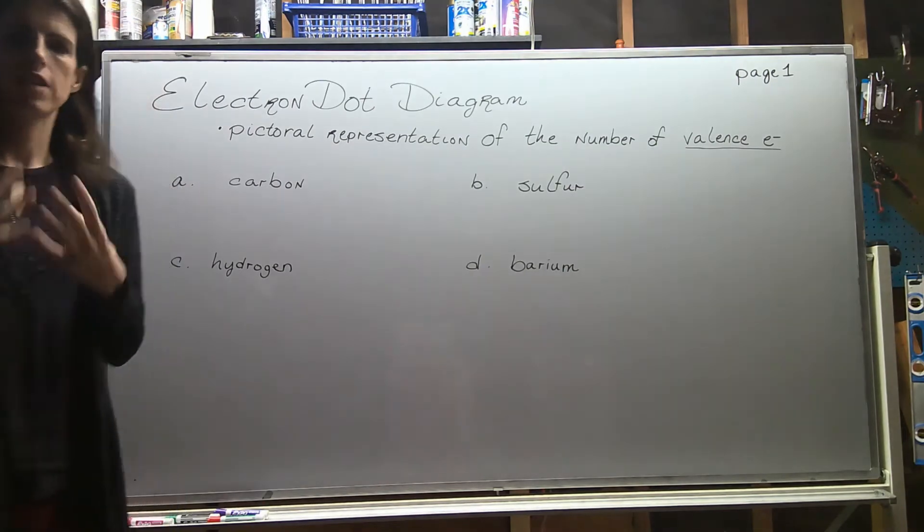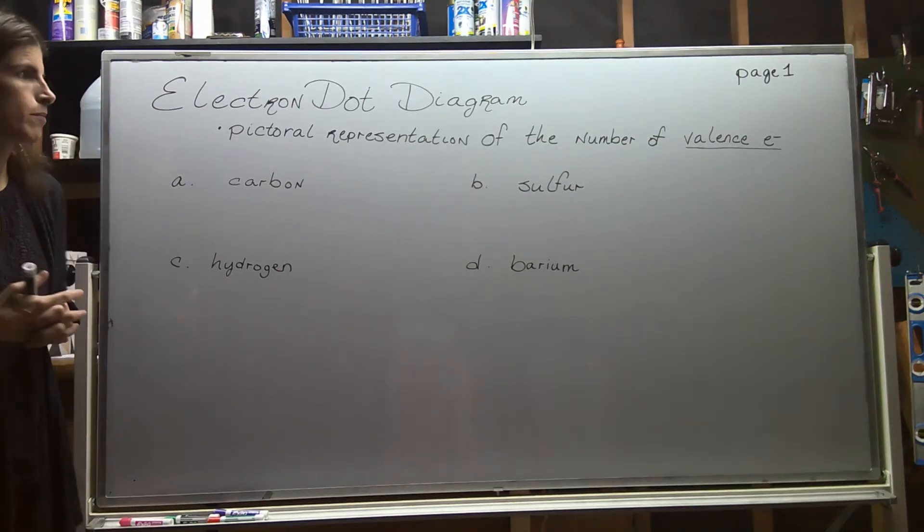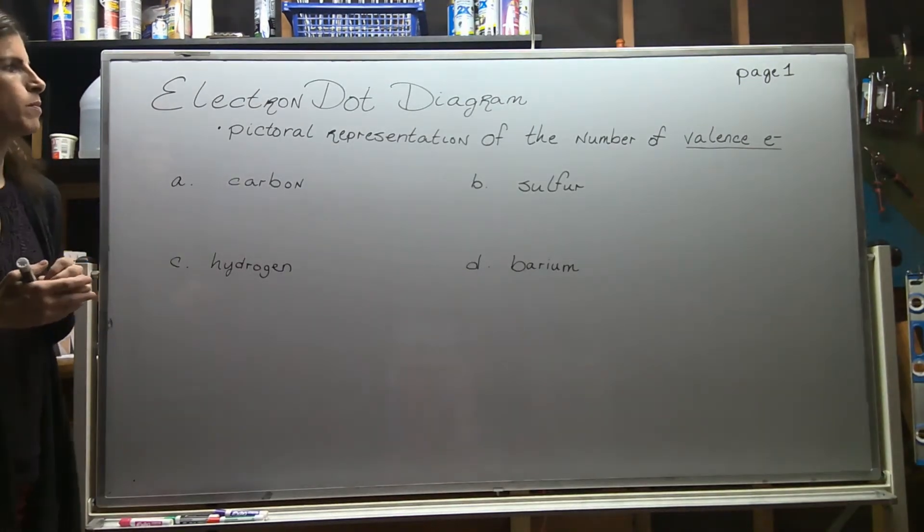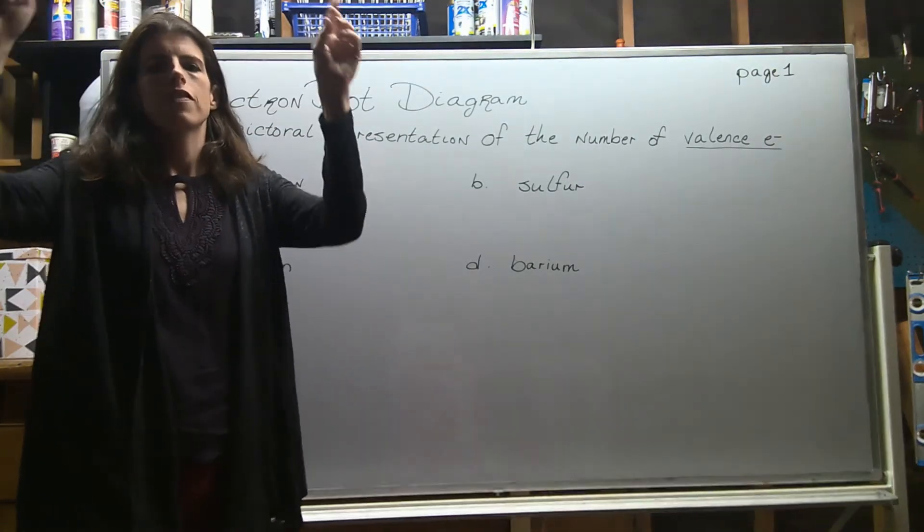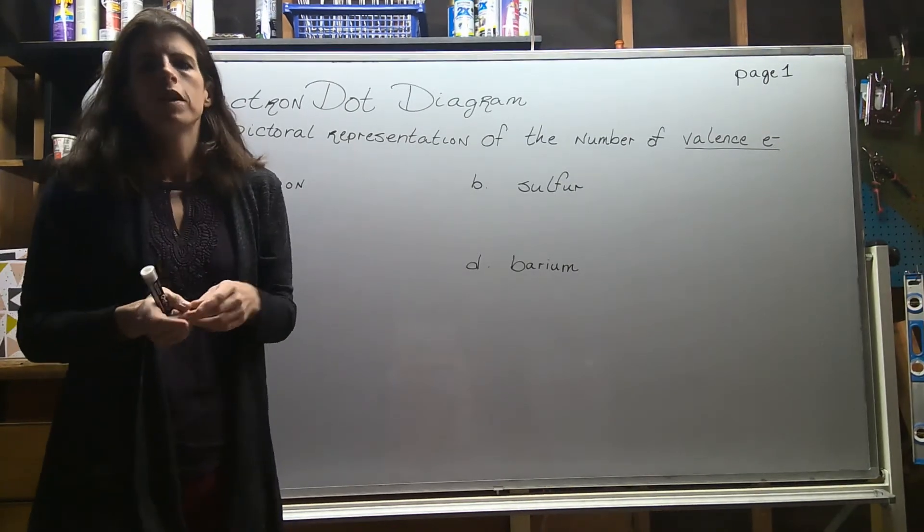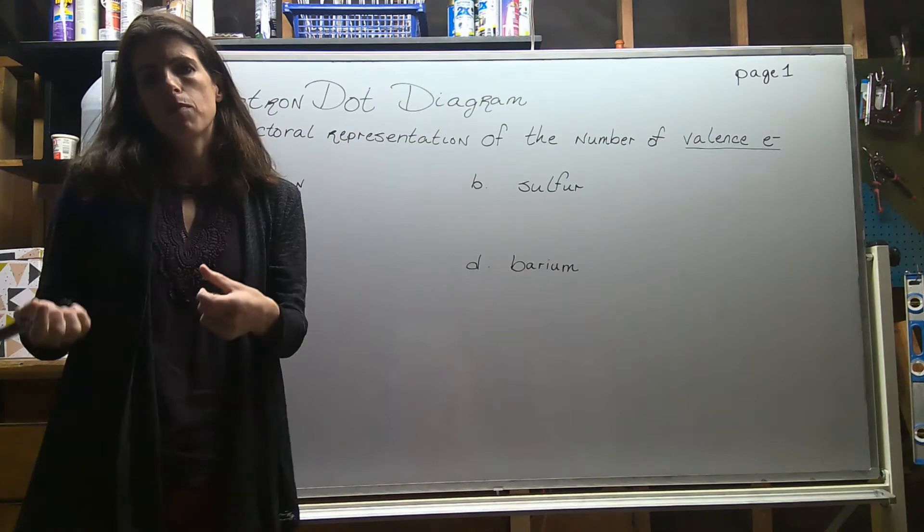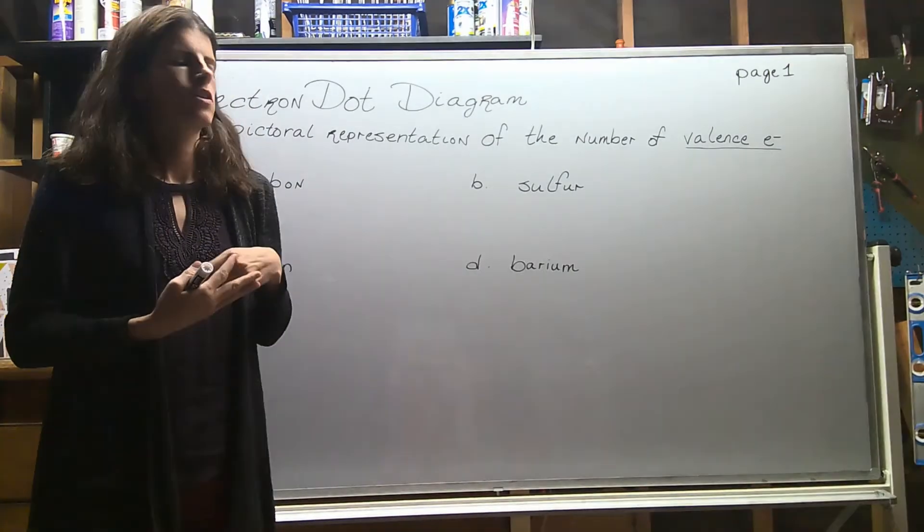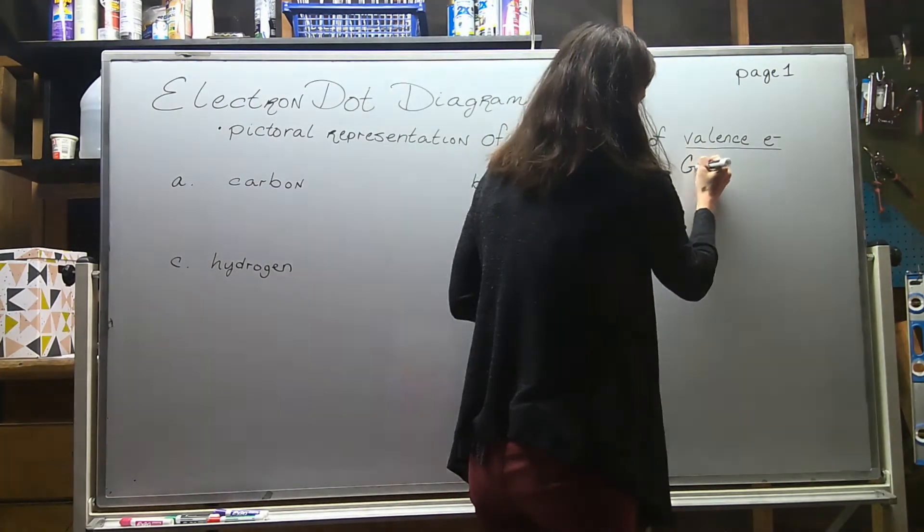The first topic as we delve into Lewis dot structures is electron dot diagrams. We're going to come up with a pictorial representation of the number of valence electrons. Remember, valence electrons are the electrons on the outside of the atom, and they're the ones that enable the atom to bond with other atoms and participate in reactions. We get the number of valence electrons from the group number.